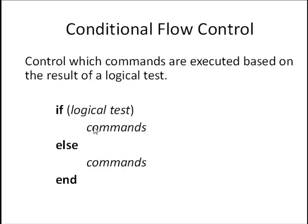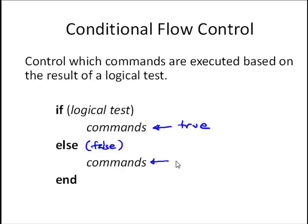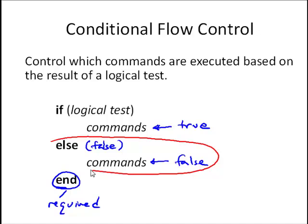The idea here is to control which commands are executed based on the result of a logical test. The way this works is we say if the logical test is true, we execute one set of commands. If it's false — so else means it's false — we'll execute this other set of commands. And then the end is required to end the if block.